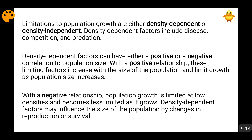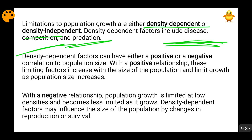Now we will talk about population limiting factors. These limiting factors can be classified into two groups: density-dependent limiting factors and density-independent limiting factors. Density-dependent limiting factors include diseases, competition, and predation. For diseases — if the density of a population in a limited area keeps increasing, individuals will scramble for resources, diseases may spread, and those diseases will limit population growth. Today we can see many communicable and non-communicable diseases spreading, partly because we have exceeded our carrying capacity.